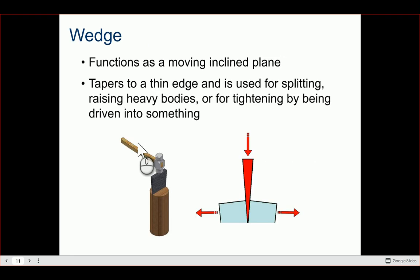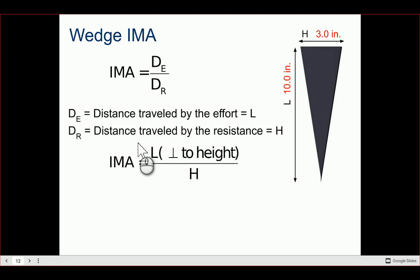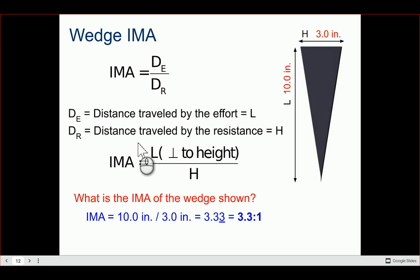A wedge is just a moving incline plane that tapers to a thin edge. You can use it to raise heavy bodies, split things, or tighten by driving it into something. The only difference from the incline plane is that the length (L) for the wedge is perpendicular to the height — not the sloping edge. You can see this in the diagram on the right. IMA = L / H, using the same notation.